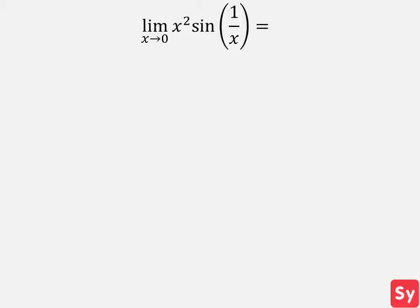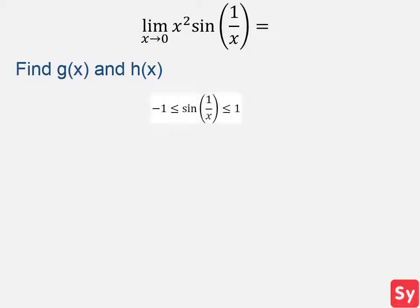Let's see an example. We have the limit of x squared times sine of 1 over x as x approaches 0. We first must find the upper bounded function h and the lower bounded function g. We know sine of 1 over x is between negative 1 and 1, because the graph of sine of x is always oscillating between negative 1 and 1. Now we'll multiply the inequality — negative 1 is less than or equal to sine of 1 over x is less than or equal to 1 — by x squared to get f in the middle. By doing this, we also get our g and h.